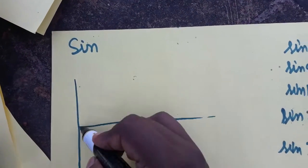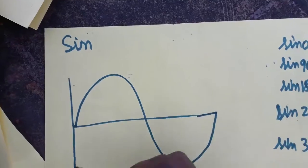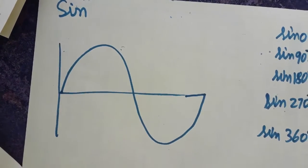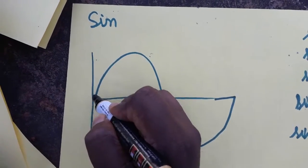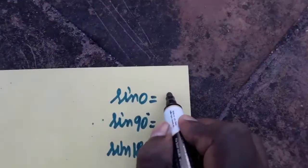This graph is a sin graph. From this graph we can without memorizing get the value. Sin 0 degree - it is 0 degree, the graph is at the origin, so sin 0 answer will be 0.